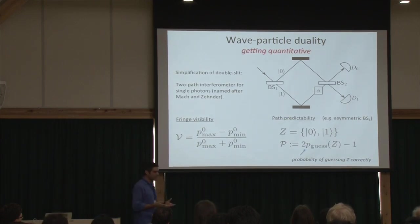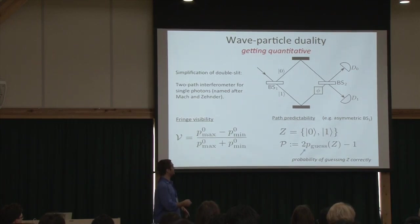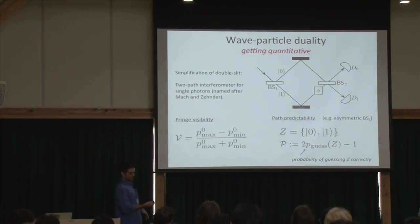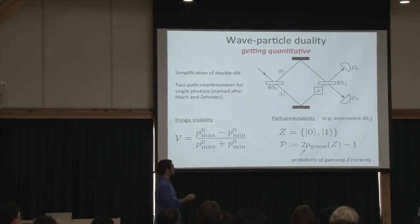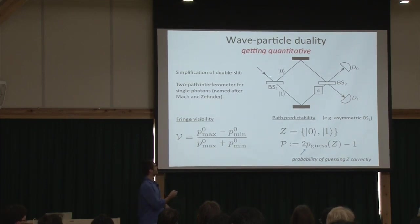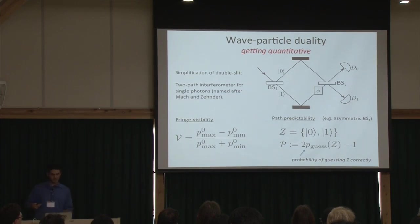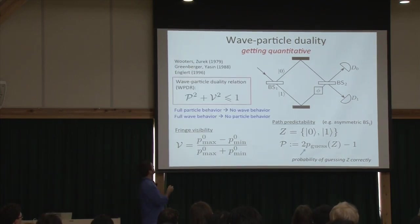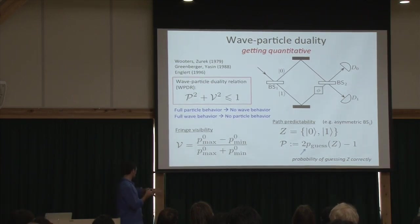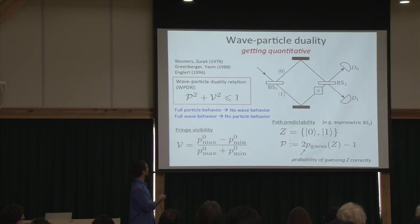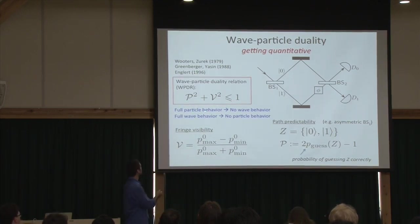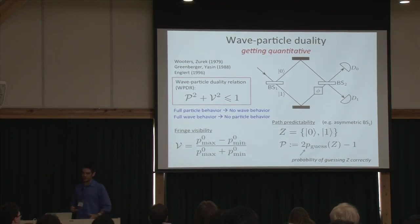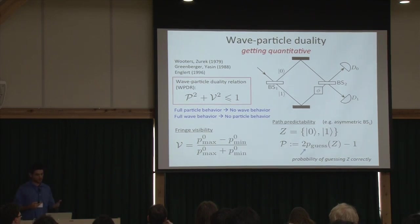Likewise, we define a measure of particle behavior: the path predictability P — how well can you predict which path the photon goes on? The path observable is denoted z. Non-trivial predictability can be achieved by making the first beam splitter asymmetric, for example with a higher chance of reflection than transmission. It has been proven that you get a nice trade-off: P² + V² ≤ 1, which implies that full particle behavior means no wave behavior and vice versa. The intermediate case of partial predictability is also handled nicely.